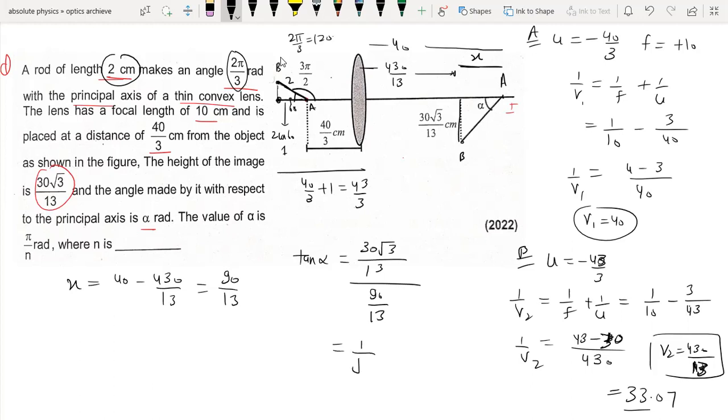So this equals 1 by root 3. That means alpha equals 30 degrees. Now alpha is π by n, so n equals 30 degrees. Since π is 180 degrees, n equals 6.